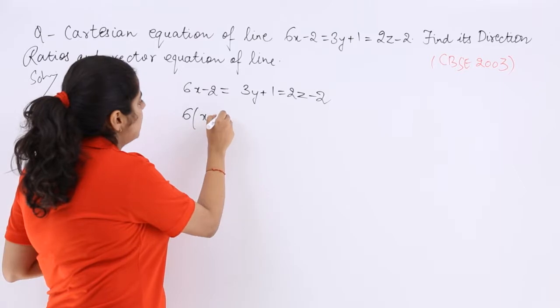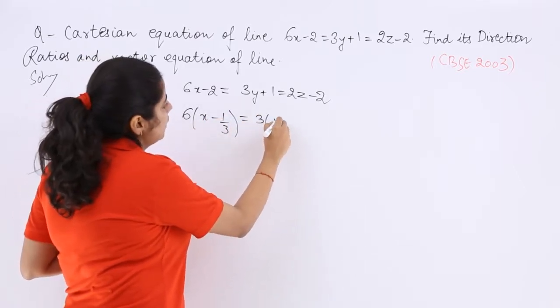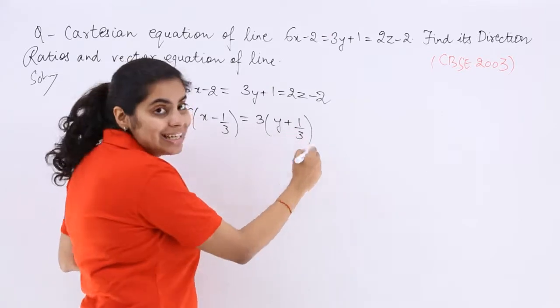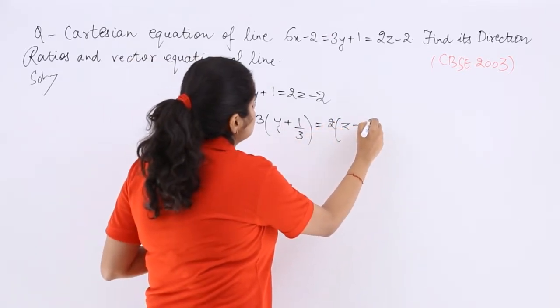So if I take 6 common, it becomes x minus 1 by 3. If I take 3 common, it becomes y plus 1 by 3. If I take 2 common, it becomes z minus 1.